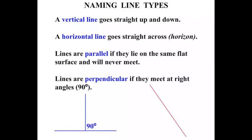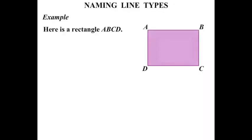Sometimes the lines go right through each other like that. But again, if we measure the angles and they are all 90 degrees, then we say that those lines are perpendicular to each other. Let's look at an example. Here is a rectangle ABCD.